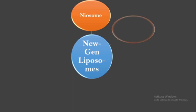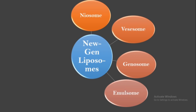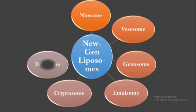Vasosomes have been recently developed, enabling the delivery of multiple drugs in a single shot. Genosomes allow the delivery of genes in a cationic phospholipid. Emulsomes are encapsulated by a solid fat core, which aids in delivering hydrophobic drugs.